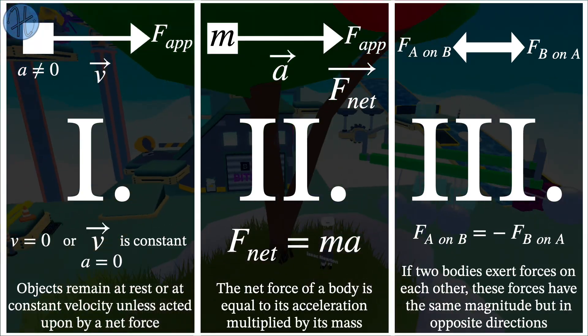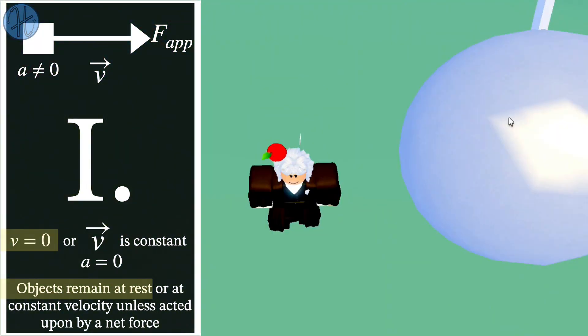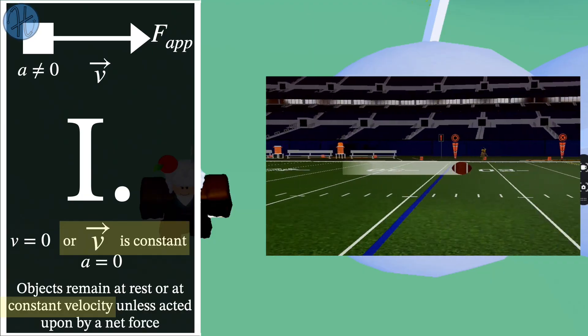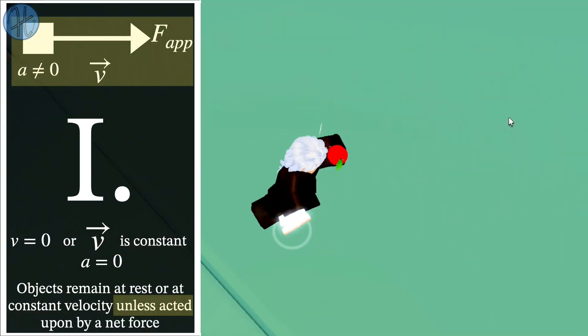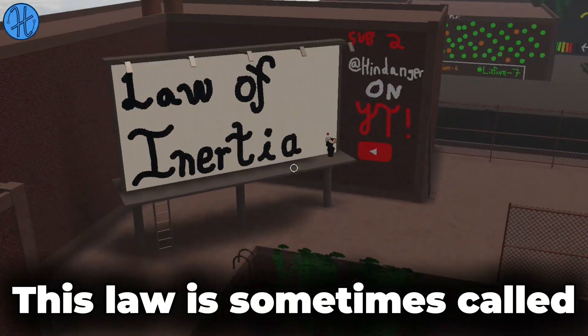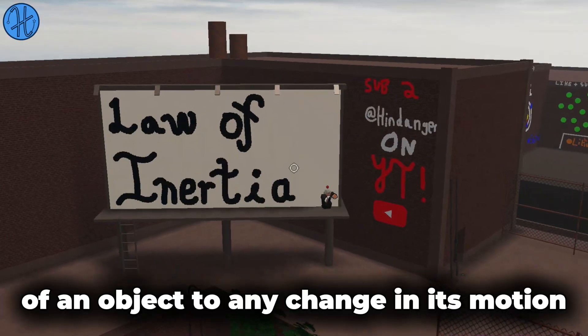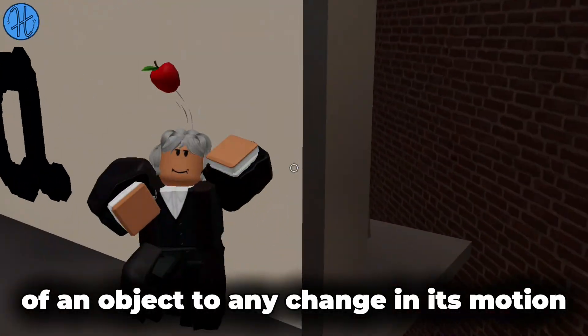The first law says a body either stays at rest or moves at a constant speed in a straight line unless it's acted upon by a net force. This law is sometimes called the law of inertia, because inertia is the resistance of an object to any change in its motion.